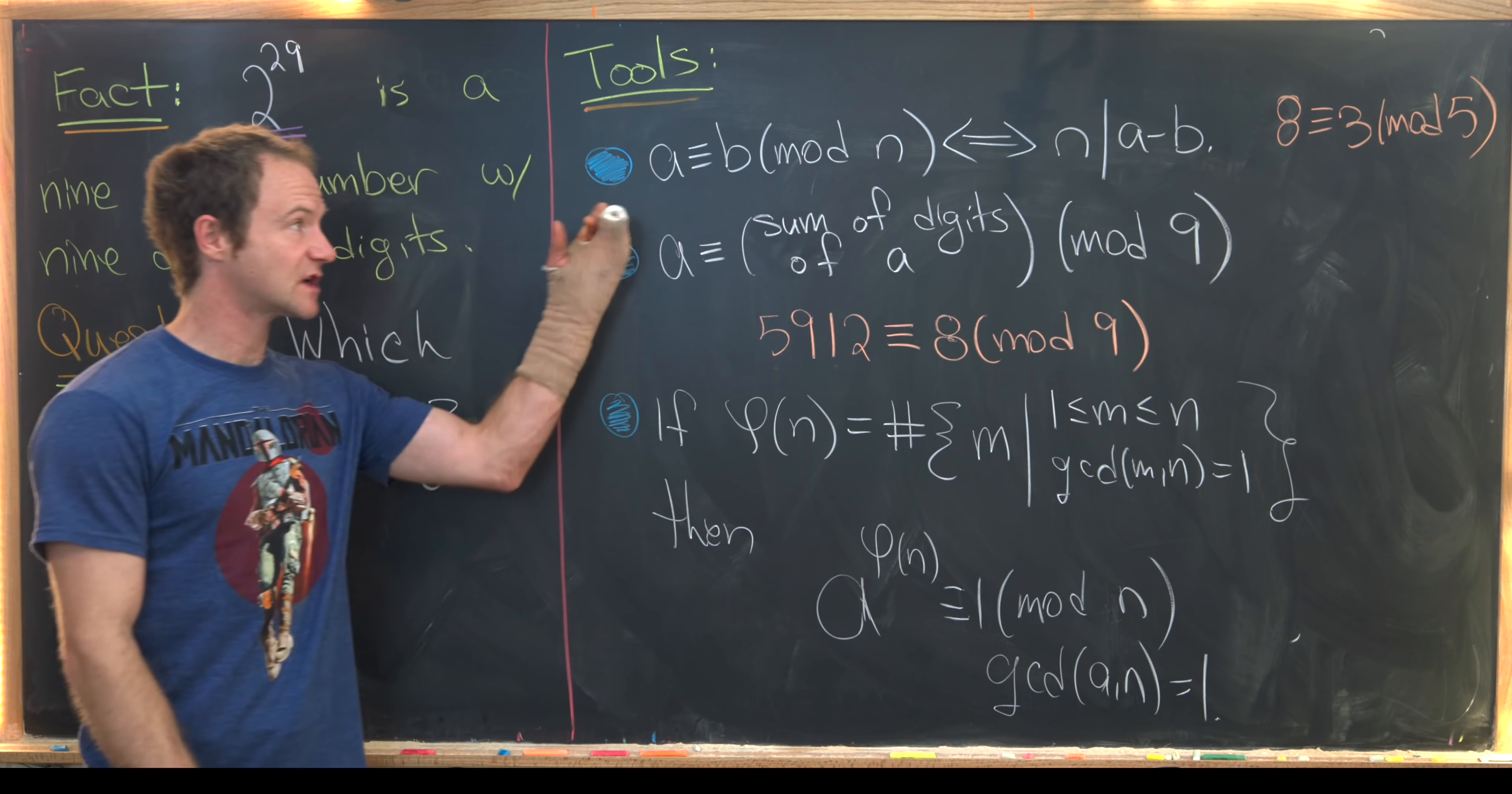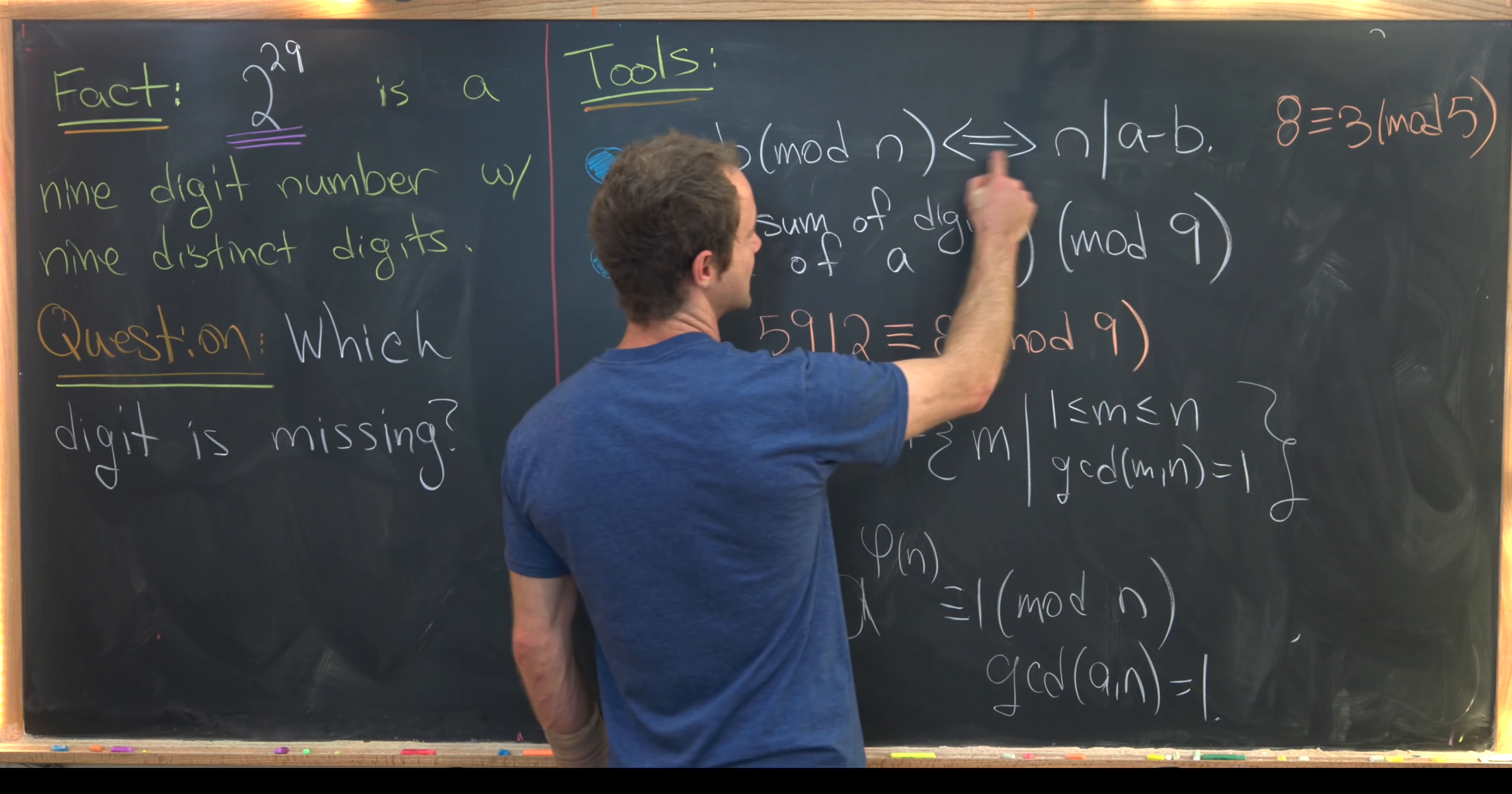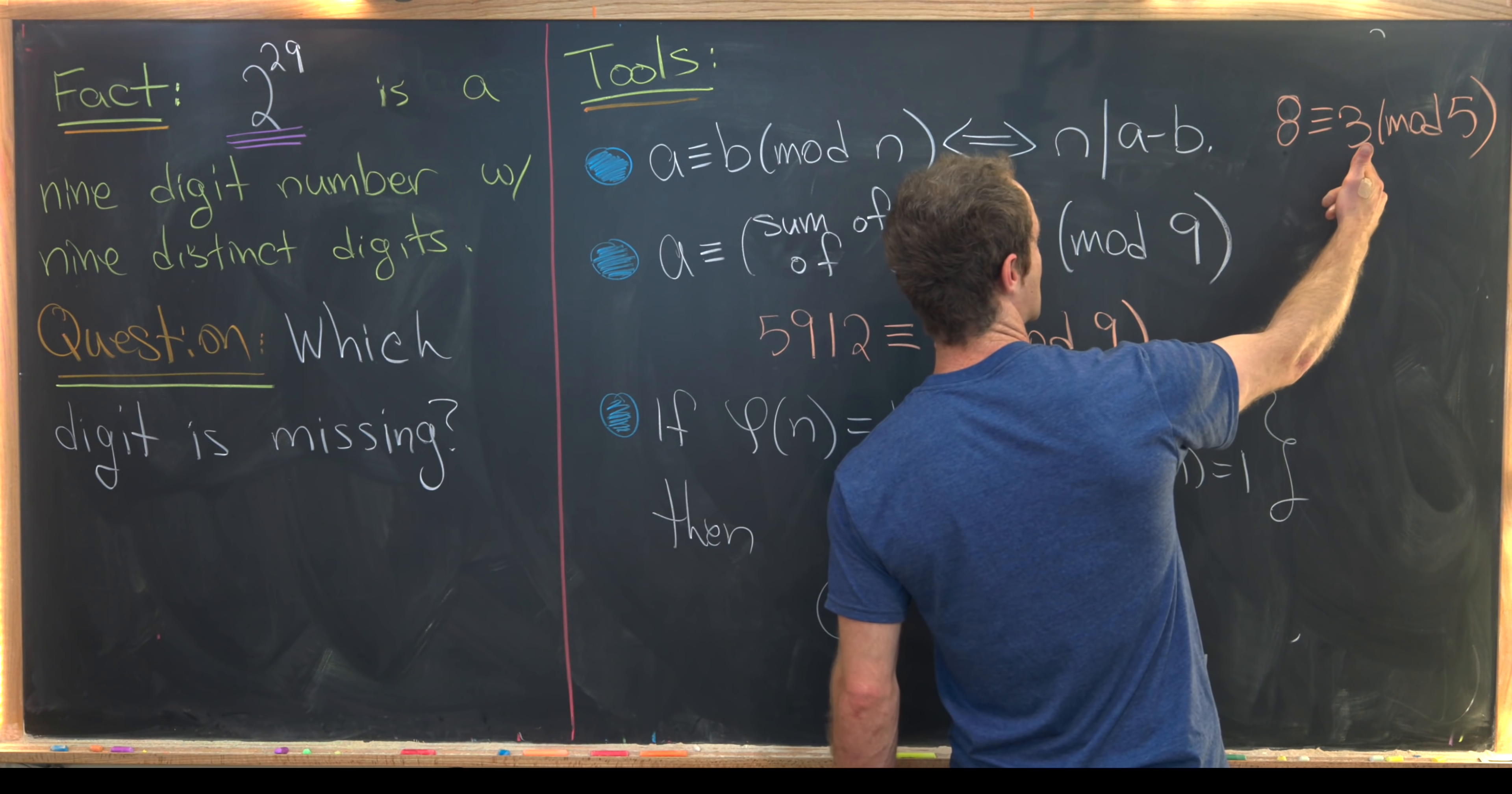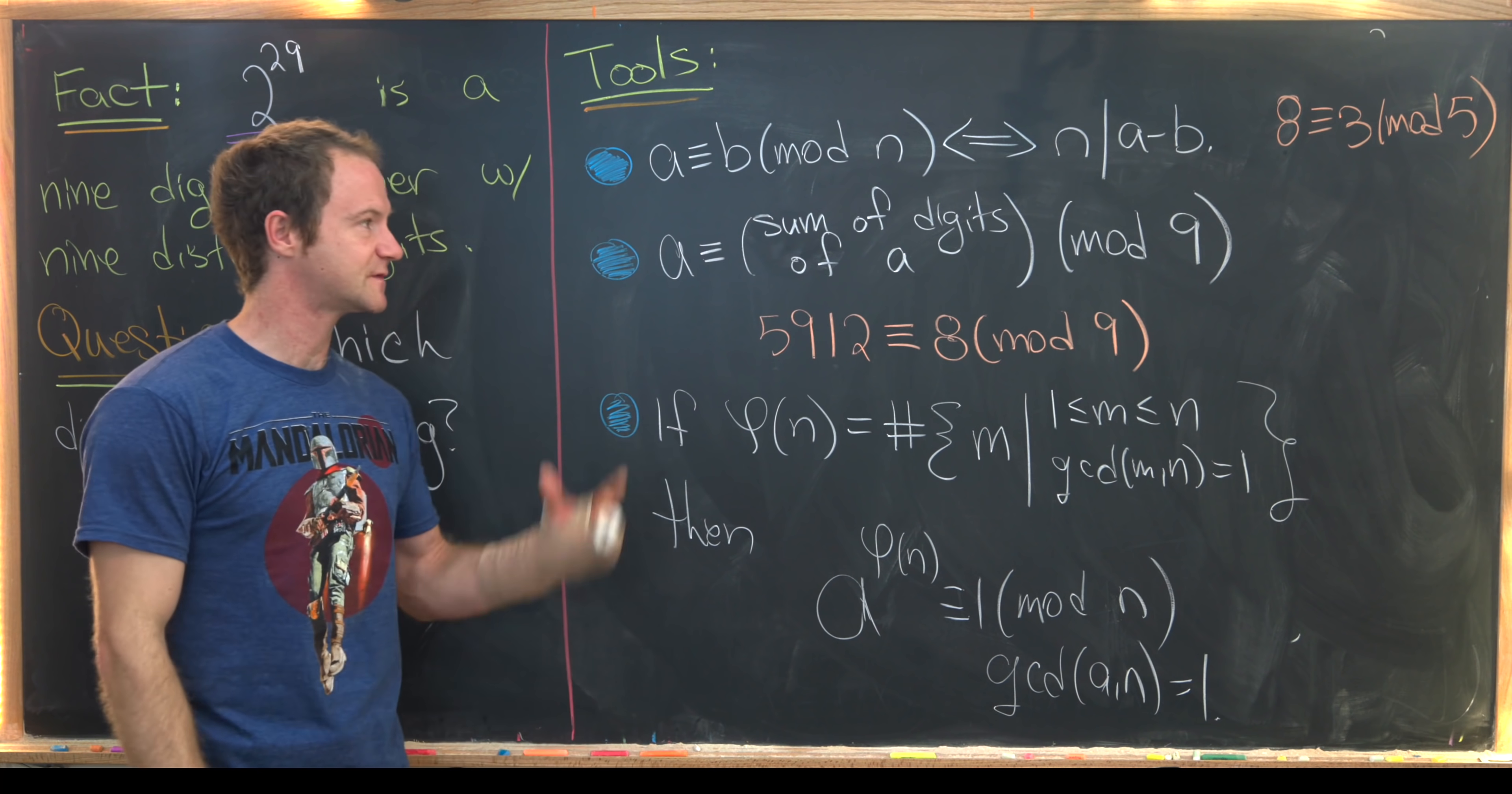First off, we're going to use the notion of congruence modulo n. So let's recall that a is congruent to b mod n if and only if n divides a minus b. So for example, eight is congruent to three mod five, that's because five divides eight minus three. Eight minus three is five.